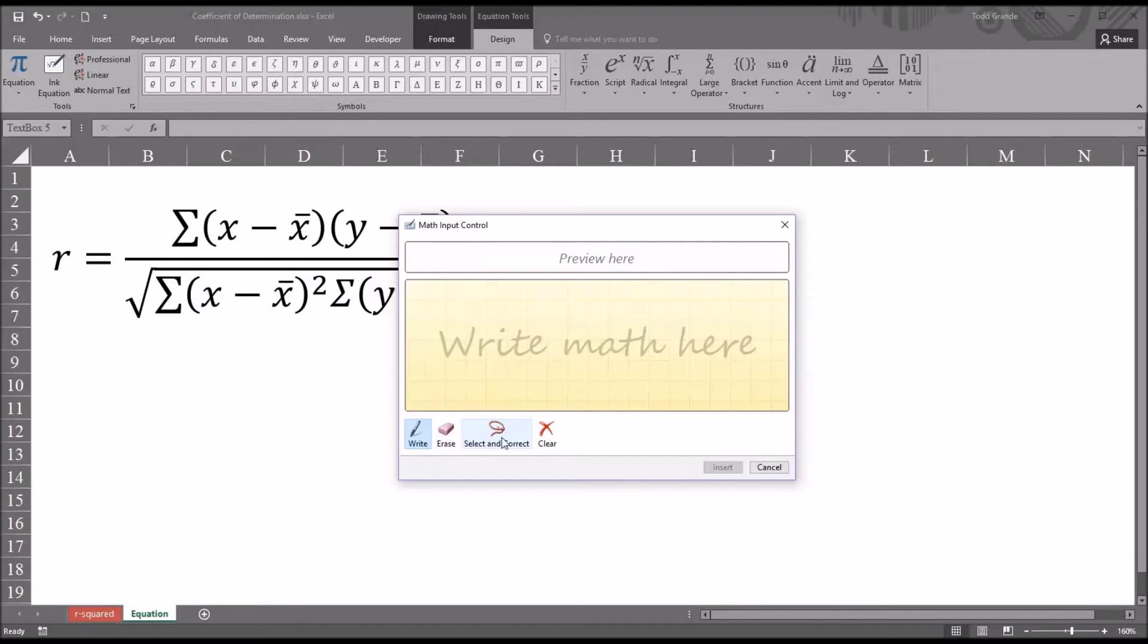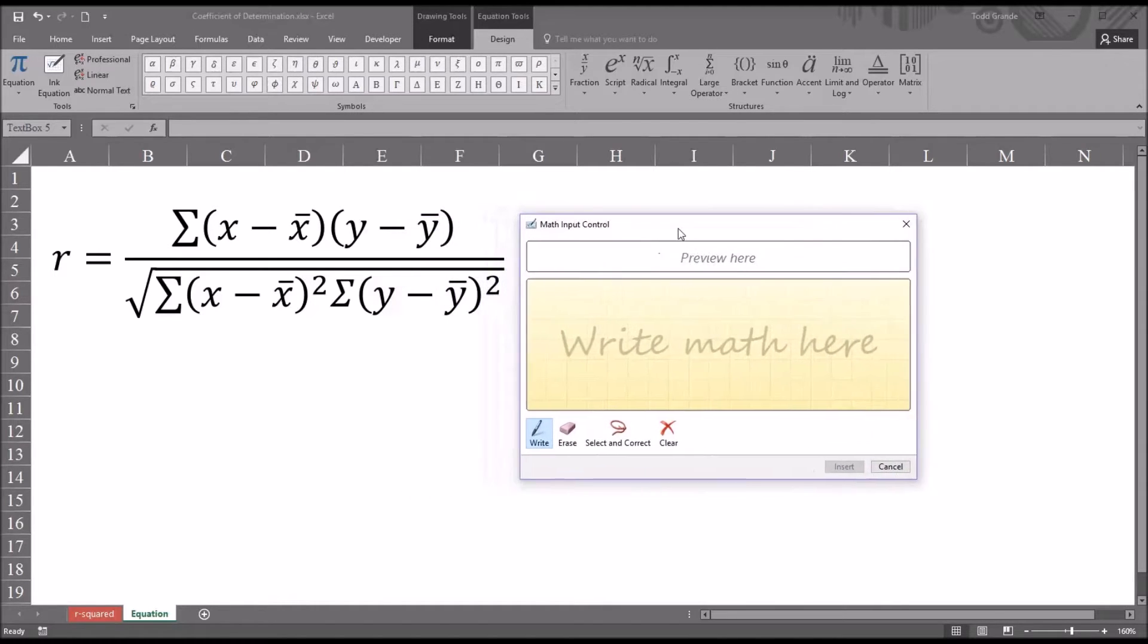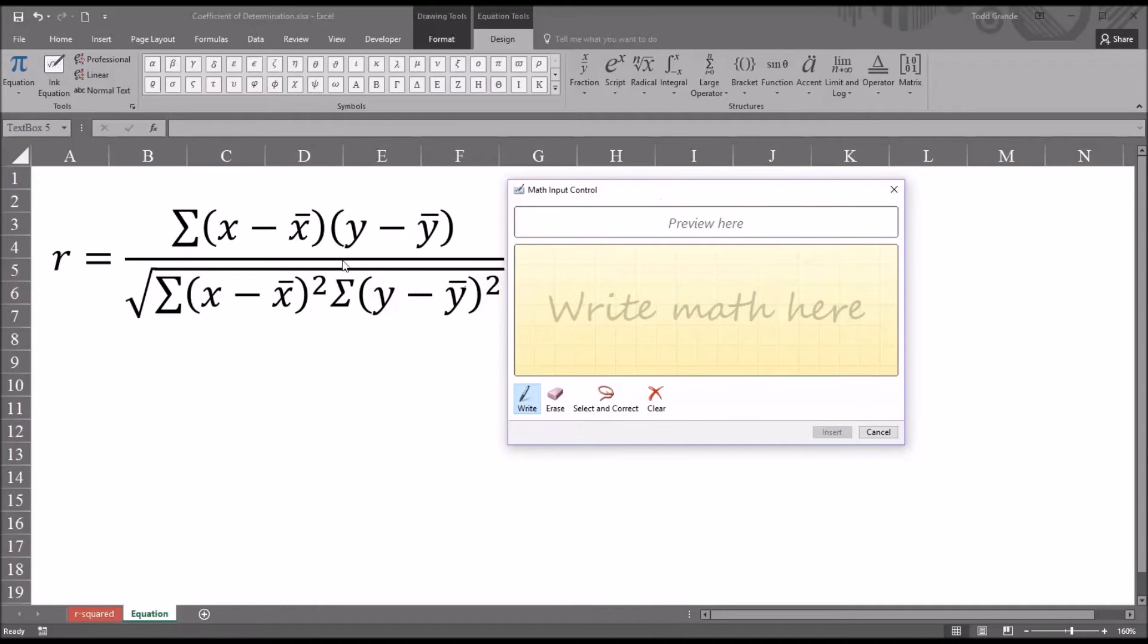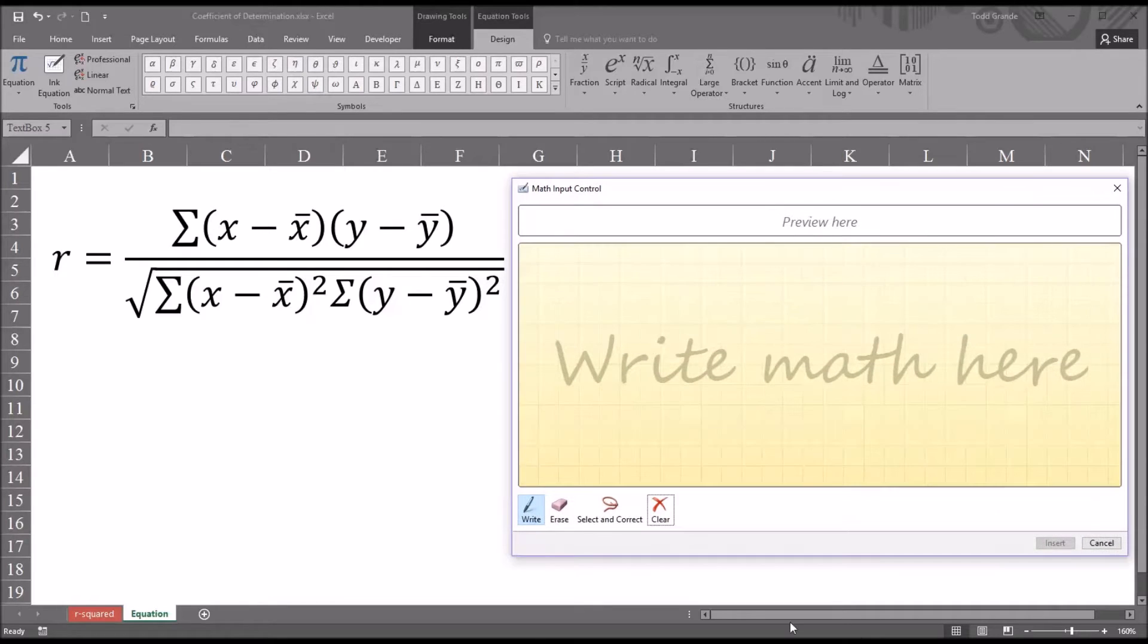And you have four options down here. Write, erase, select and correct, and clear. So I'm going to move this window over to the right a bit so I can see the entire equation that I want to reproduce.